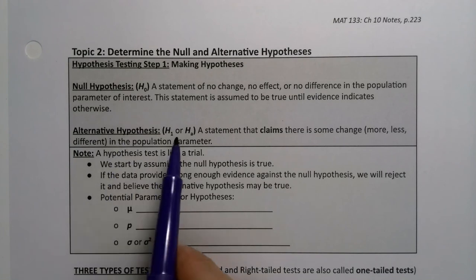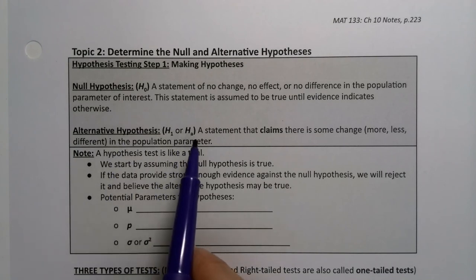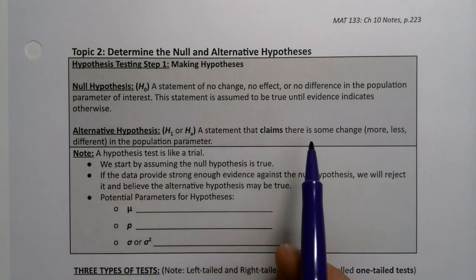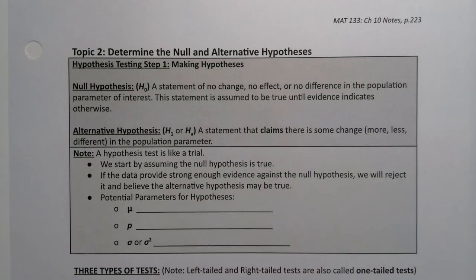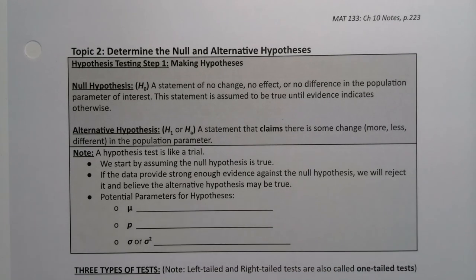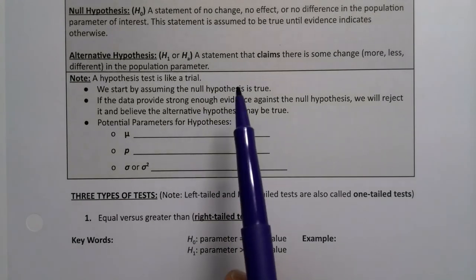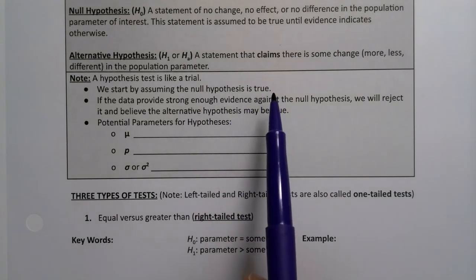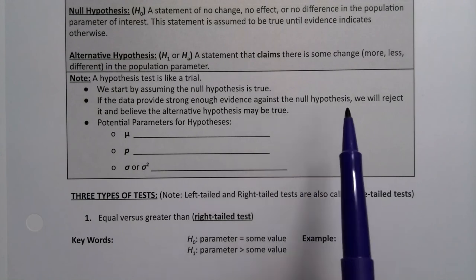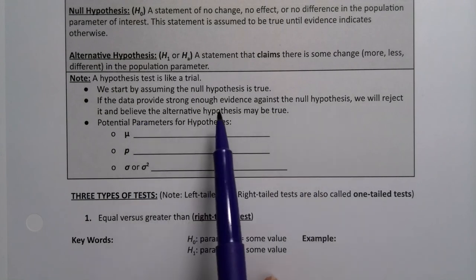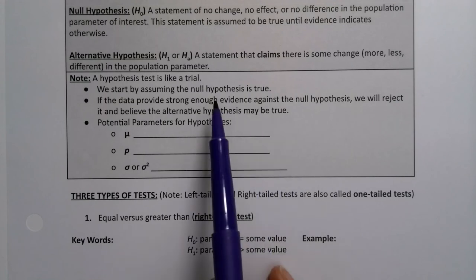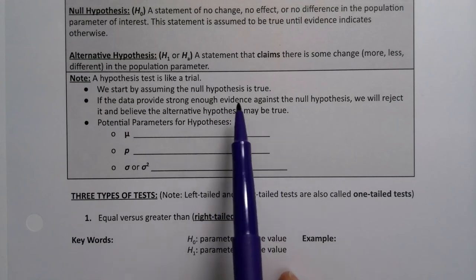The alternative hypothesis is H1 or HA. That's a statement that claims there is some change, either more, less, or different for the population parameter. A hypothesis test is like a trial. We start by assuming the null hypothesis is true, then we gather evidence and test that. We will reject it and believe the alternative hypothesis is true if we have strong enough evidence against that null hypothesis.